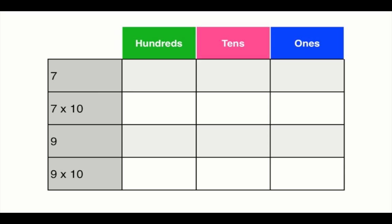Now that you have your chart recorded, let's begin solving the problem. Look for your equation on the left of the chart. We see that we are multiplying the number 7 by 10. Let's go ahead and write the number 7 in our ones column.